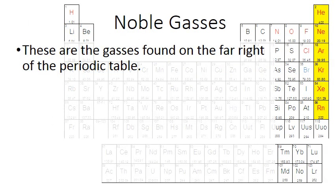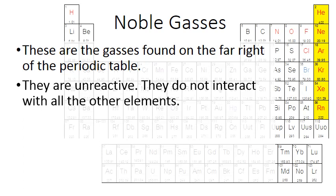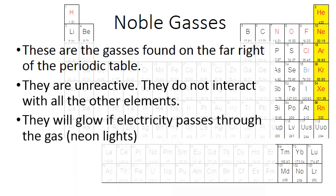So first up is the noble gases. These are the gases found on the far right of the periodic table. These gases are all unreactive. They do not interact with any of the other elements or themselves. They are basically loners. If there's a helium atom out there, it's probably by itself. It's not trying to make some sort of compound, because they just don't do that. They will glow if electricity passes through the gas. For instance, neon lights. You've probably heard of neon lights before. They are filled with the noble gas neon.